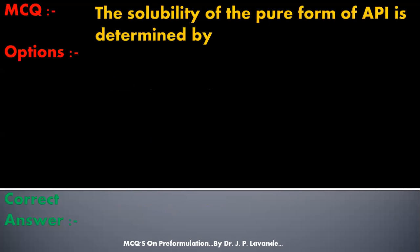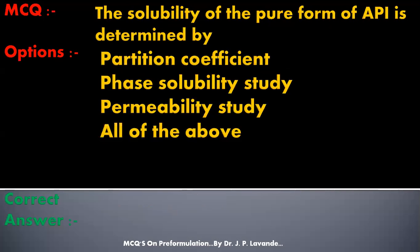Next question: the solubility of the pure form of API is determined by — options are: partition coefficient; phase solubility study; steady permeability study; or all of the above. The correct answer is phase solubility study.